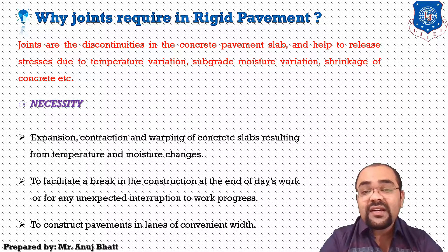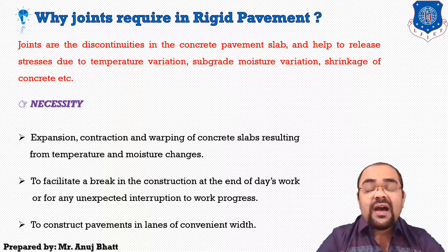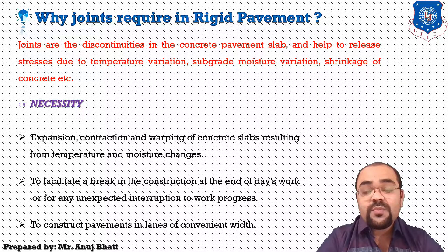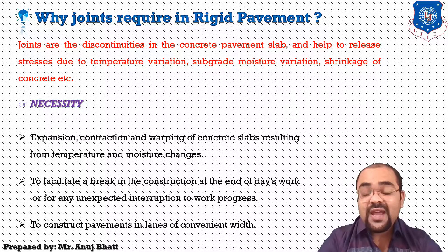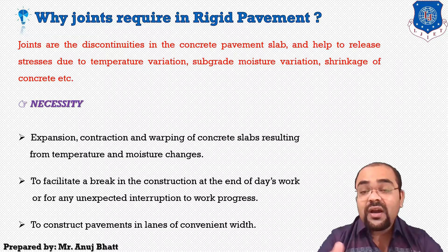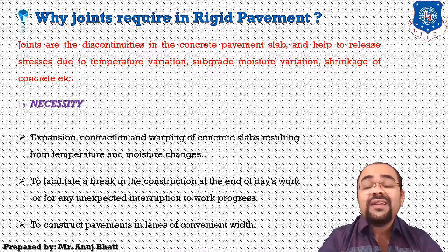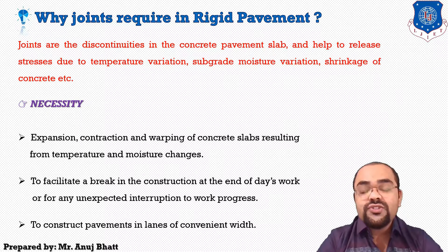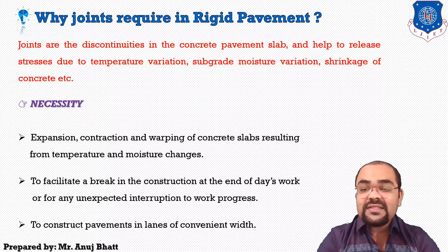The second necessity is to facilitate a break line in construction at the end of the work or if any unexpected interruption to the work progress occurs. At that time, when you have to stop construction at a particular stage, you need a provision so that the next day or after resuming work you can start with the same specification and continuity. For that, you must provide joints. The third necessity is to construct the pavement in lengths of convenient width.